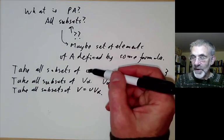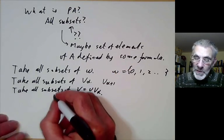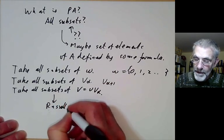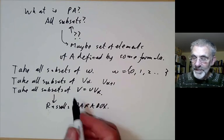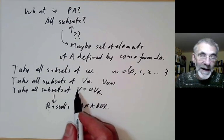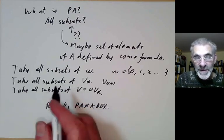And these two operations are considered to be allowable and this one you have a tendency to run into Russell's paradox.